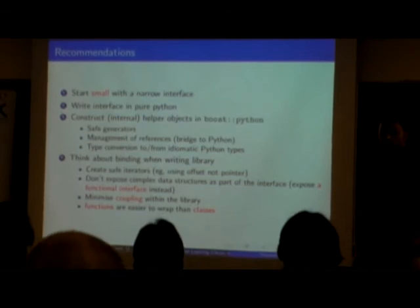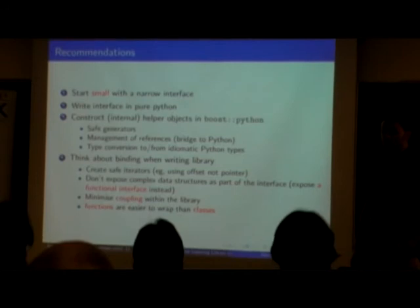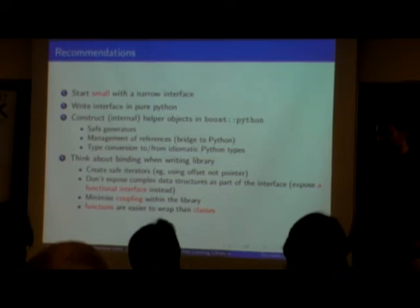Create safe iterated classes, so instead of having a pointer, you use an offset. Then it can't crash. Don't expose complex data structures as part of the interface. Expose a functional interface instead. Minimize coupling within the library, and functions are much easier to wrap than classes.